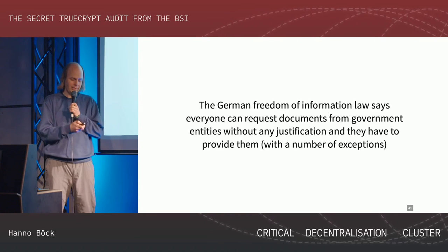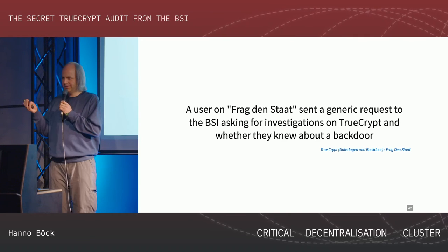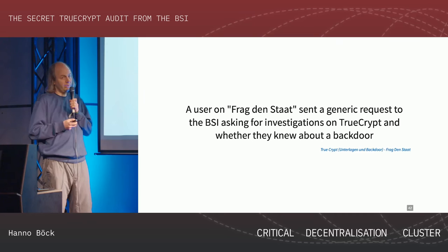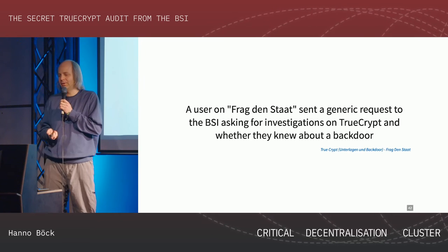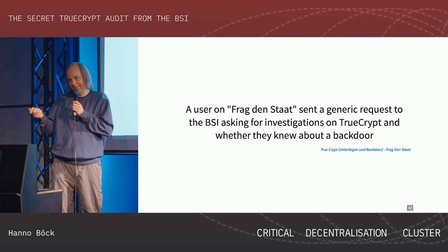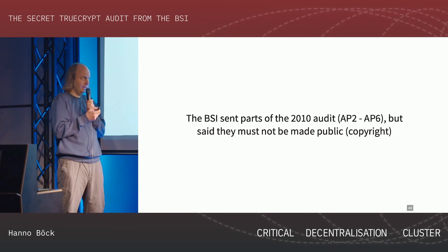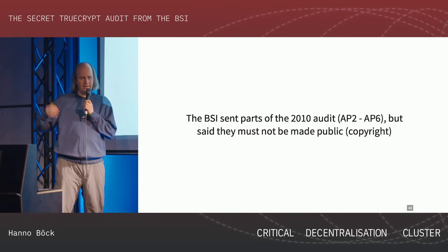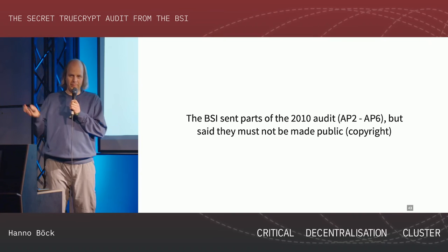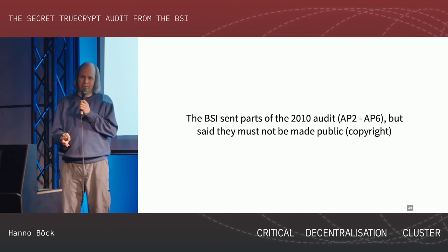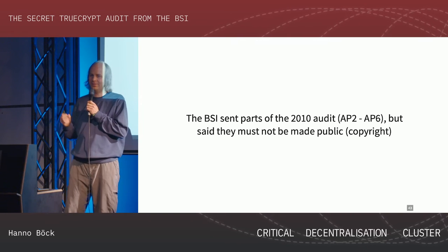On this platform, Frag den Staat - which means 'ask the state' - a user sent a very generic request to the BSI asking if they have any analysis of TrueCrypt or know anything about a backdoor in TrueCrypt. Surprisingly, he got an answer and received these documents. The BSI sent him parts of this audit from 2010, numbered from AP2 to AP6. But they also said this person is not allowed to make the documents public due to copyright - which is an unfortunate thing about freedom of information law, the government can give you a document but say you may not give it to someone else.